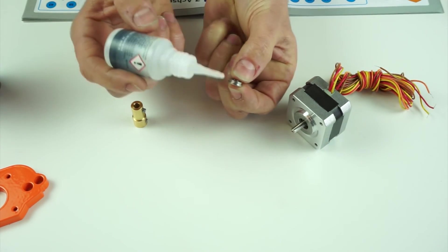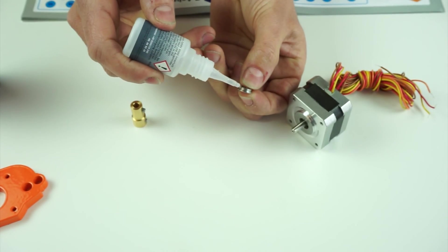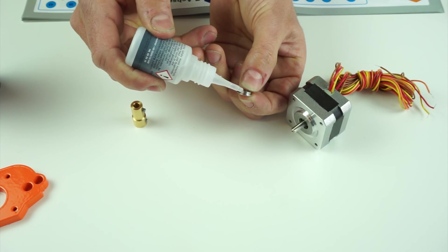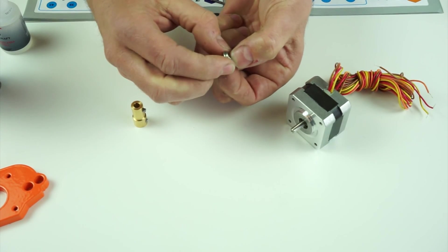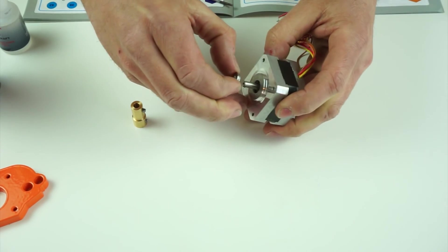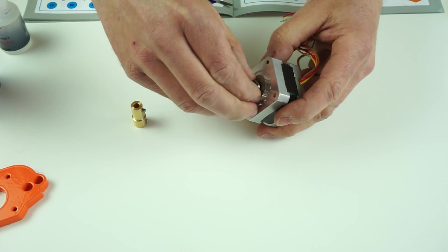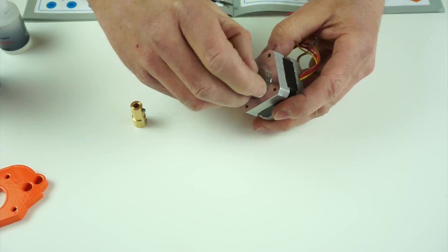To do this, simply place a small drop of glue on the inner flange of the bearing. Then place it carefully over the motor shaft and slide it into position. Once the bearing is in place, gently turn it to distribute the glue.